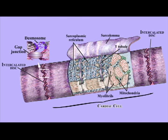Cardiac conductile cells, typically called Purkinje fibers, are not presented on these cardiac tissue histology slides.